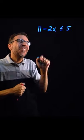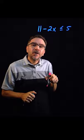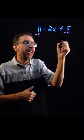Okay, here we're asked to solve and graph the solution set for a linear inequality. We're also going to express our answer in interval notation. The first step here is to subtract 11 on both sides.